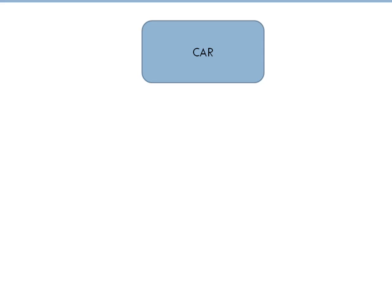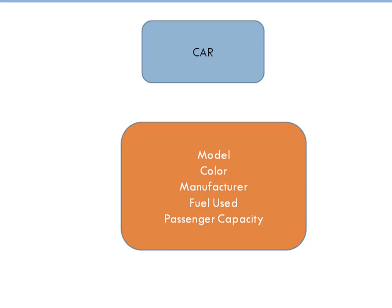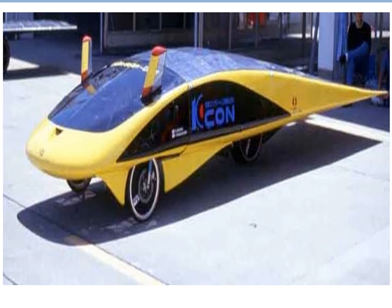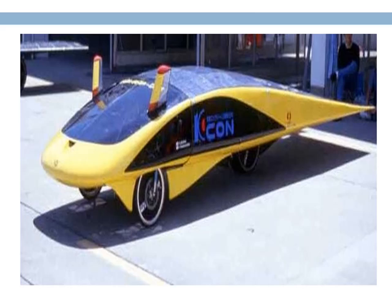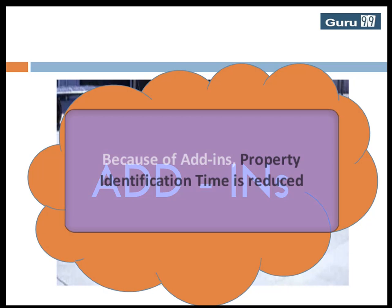In the exercise we did earlier, what if I told you in advance that the picture would be of a car? In that case, you can prepare a list of important properties to be noted for a car object, so when the object is shown to you, you can quickly learn the property values for easy identification later. This is nothing but the concept of add-ins, where you are instructing QTP in advance of the nature of the object to be recorded, so it can reduce the time required to learn its properties.